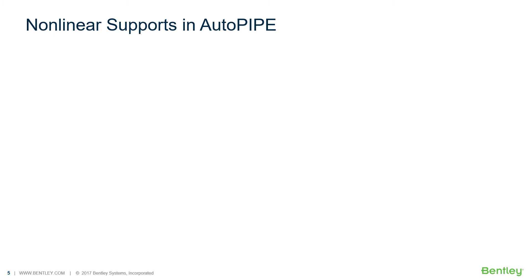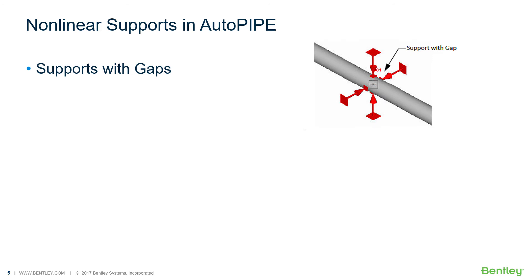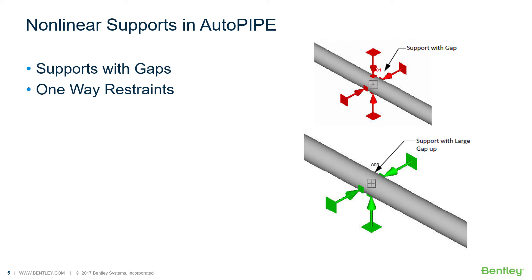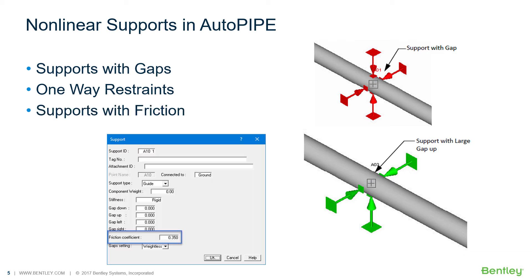Autopipe considers the following supports in a nonlinear analysis: supports with gaps and one-way restraints — a large gap larger than the pipe diameter can be specified to model a one-way restraint — and friction between the pipe and support.